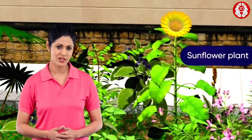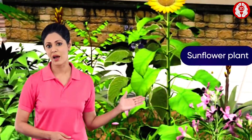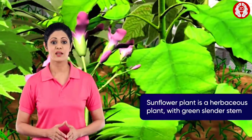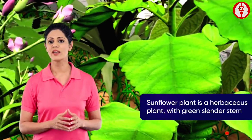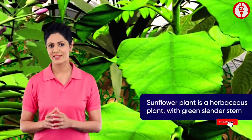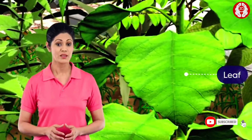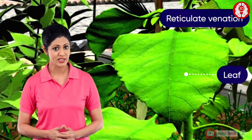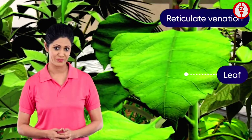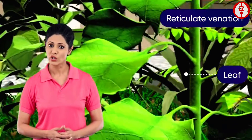Let us observe a sunflower plant, which is a dicot plant. It is a herbaceous plant with a green slender stem. The leaves show a reticulate venation. If we look at its root, it appears branched.